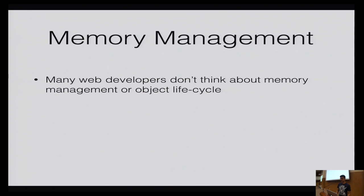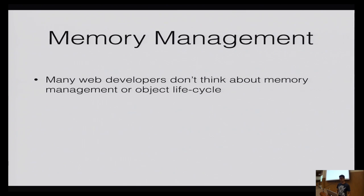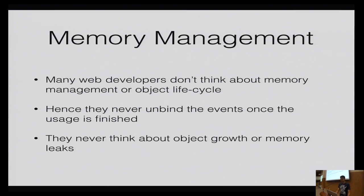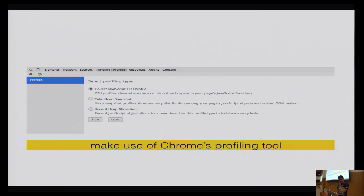Memory management is critical. Many web developers don't think about memory management or object lifecycle because web applications use the system's memory, which is plentiful. But for mobile devices, you need to think about it a lot. Never leave events unbound once usage is finished, and never ignore object growth or memory leaks. You can use simple tools like Chrome's profiling tool to check how many objects have been created and how much memory is being allocated. You can also use the iPhone simulator and profile it on Safari.